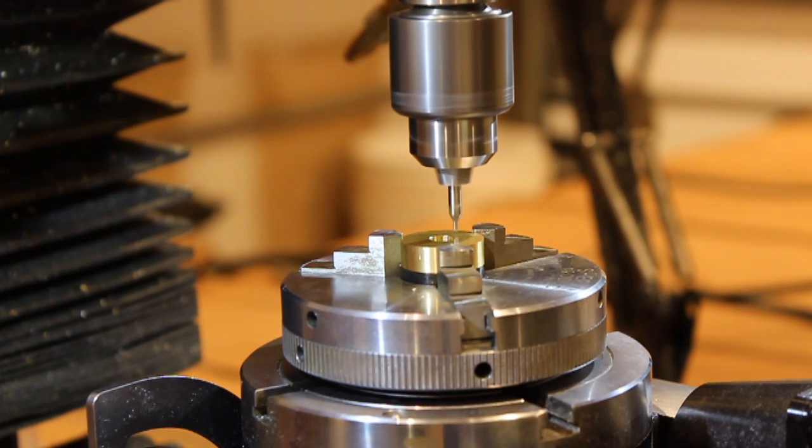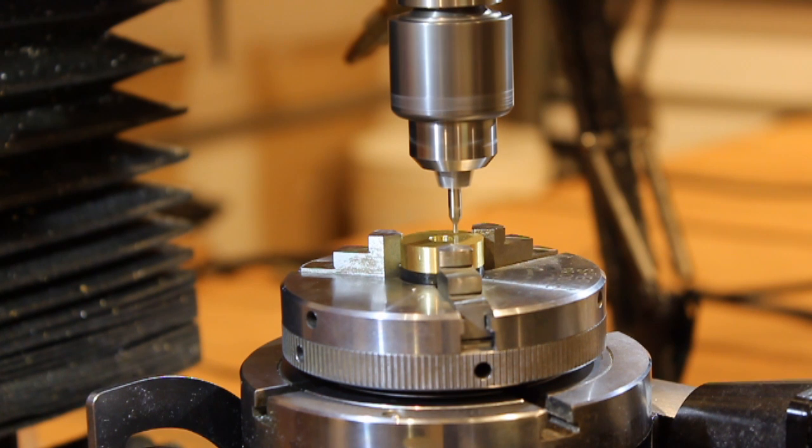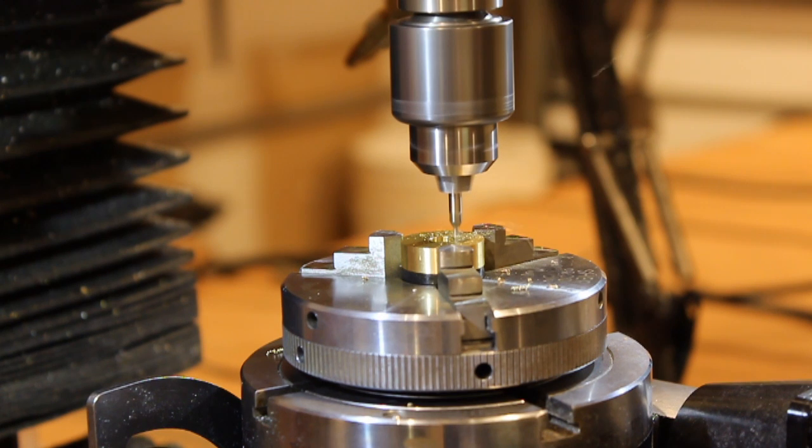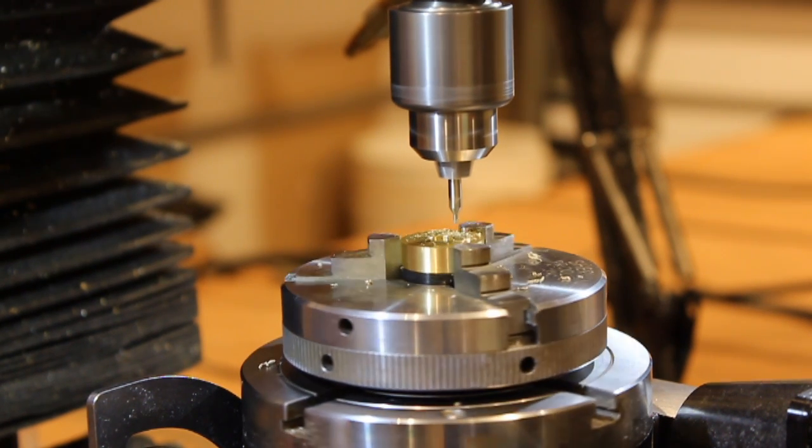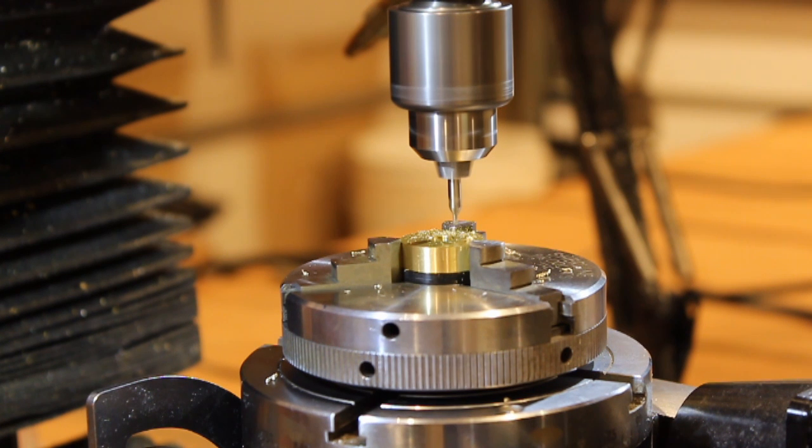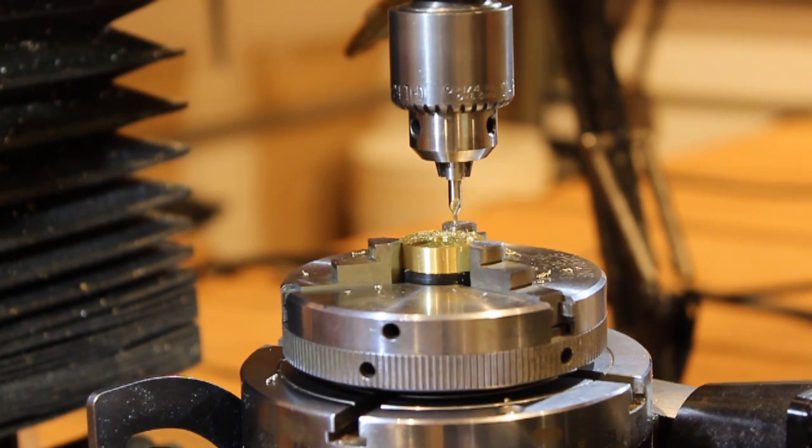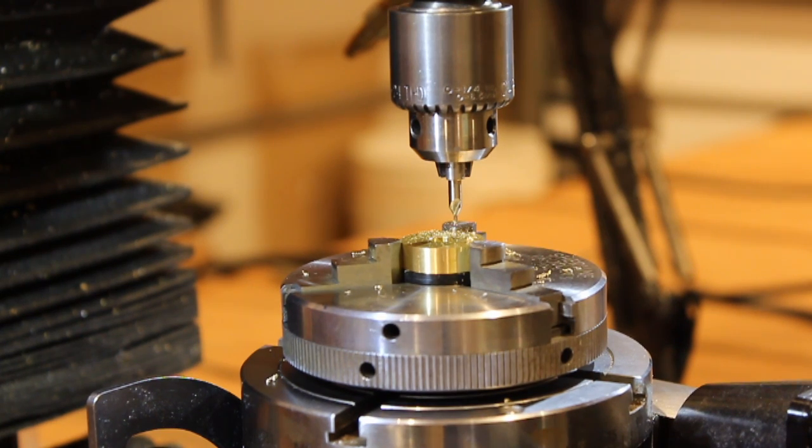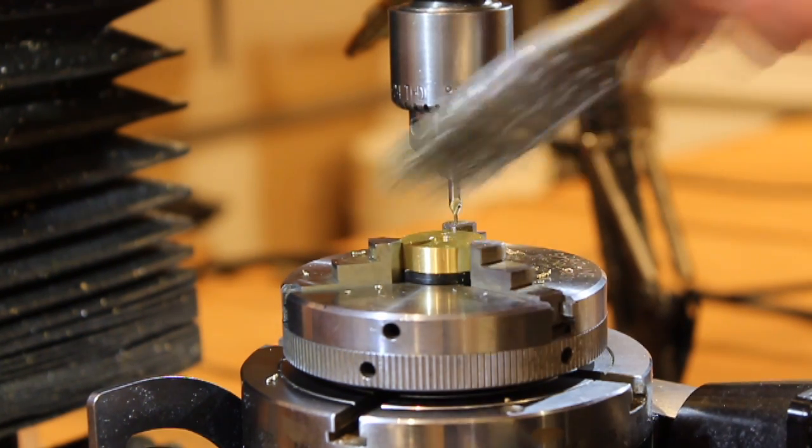I'm using a very slow feed rate. It's all very gentle operation here. What the G-code does is drill the center hole and then advance, in this case, 32.725 degrees. That number is simply 360 divided by 11 so that we end up with evenly spaced holes around the pitch diameter.